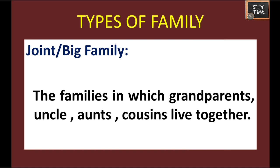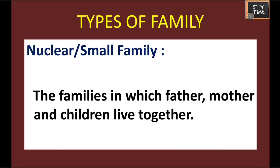Types of family. You have two basic types: one is joint family or big family, and another one is nuclear or small family. The families in which grandparents, uncles, aunts, and cousins live together are called joint family or big family. The families in which father, mother, and children live together are called nuclear or small family. In ancient times there were joint or big families, but in modern generation we can see only nuclear or small families.